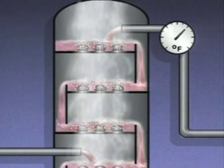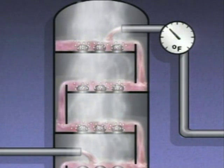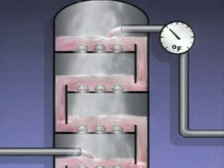A column can also overload or flood if the temperature of the reflux is too low. A very low reflux temperature can cause too much vapor to condense in the column, which can overload the trays and impede the rising vapor. Excessive liquid flow down a column can cause overloading and flooding, but trays can also become overloaded because of excessive vapor flow up the column. One of the most common causes of excessive vapor flow is too high a temperature in the bottom of the column.